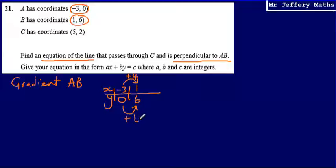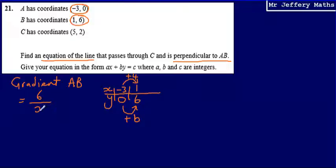The Y coordinate is changing by 6 when the X coordinate is increasing by 4. We need to figure out what the Y coordinate goes up by when X only increases by 1. Because it's a straight line, that difference is constant. So the calculation to work out the gradient of AB is to take the difference in Y, which is 6, and divide by the change in X, which is 4. So gradient AB = 6 divided by 4. As this is a non-calculator paper, that's 3 over 2, or 1.5.